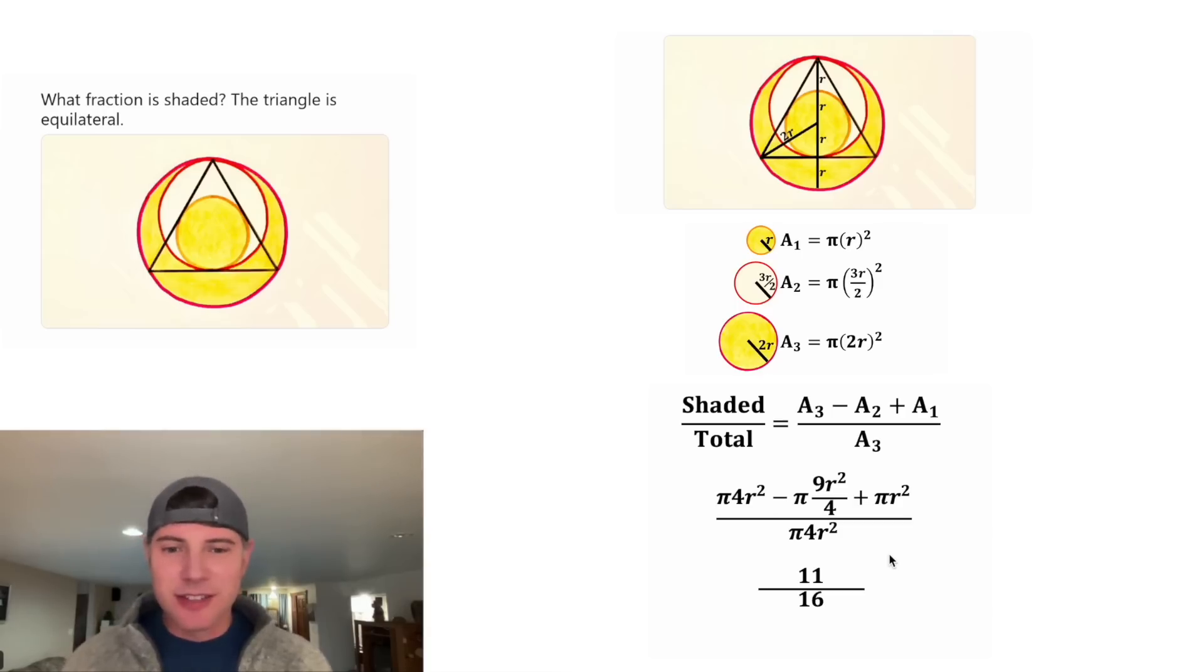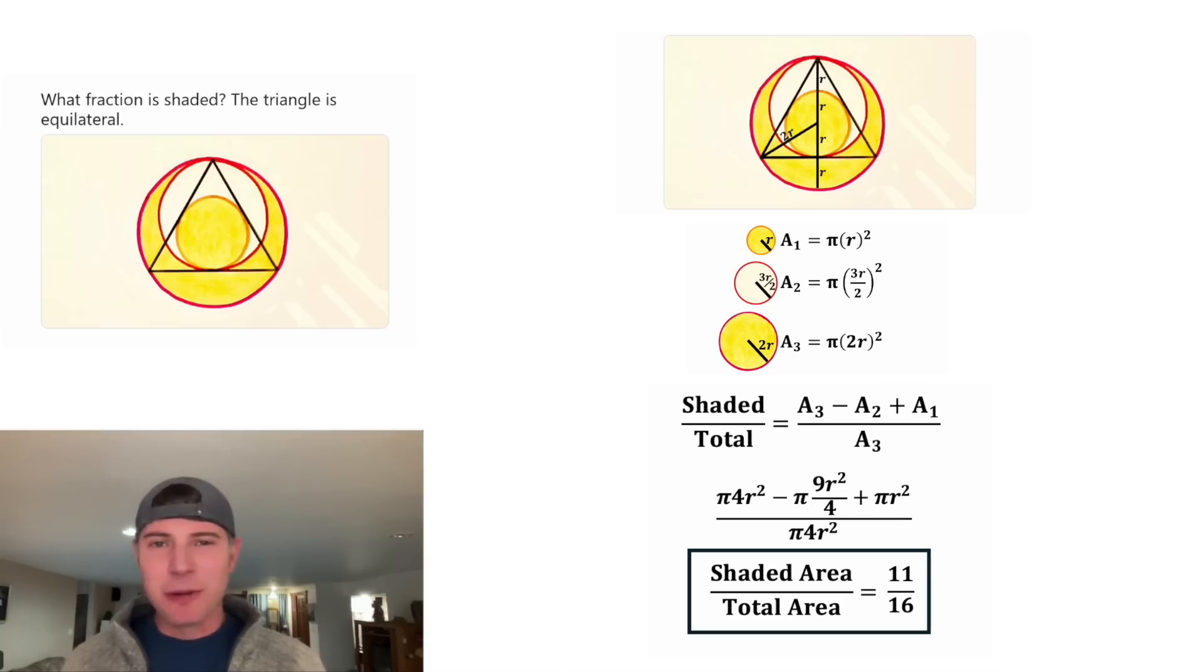And now we're done. This is the ratio. The fraction that is shaded is 11 sixteenths. Let's give it a label of shaded area over total area. This is the answer to our question. Let's put a box around it.